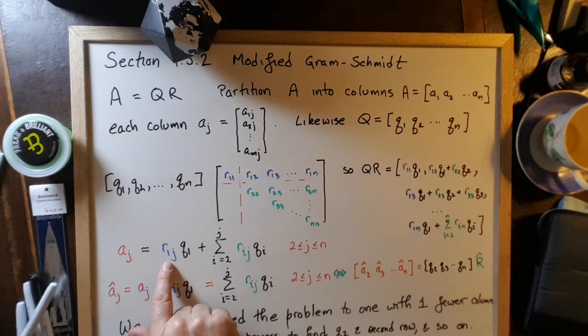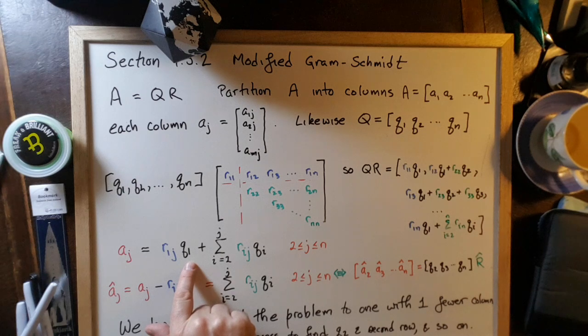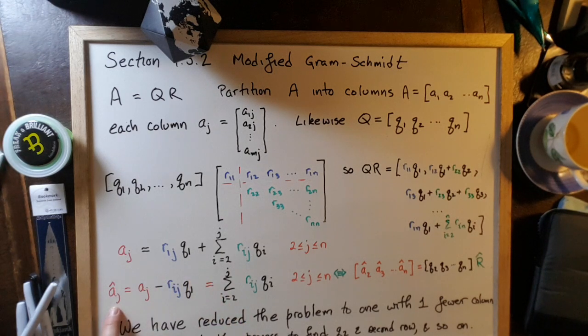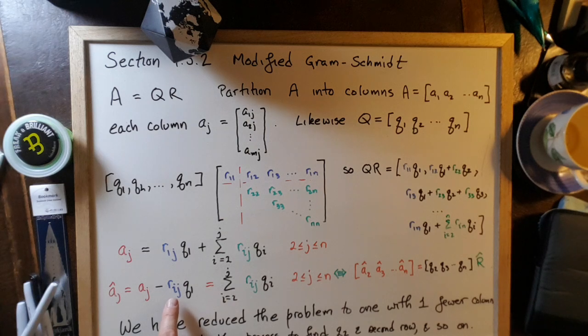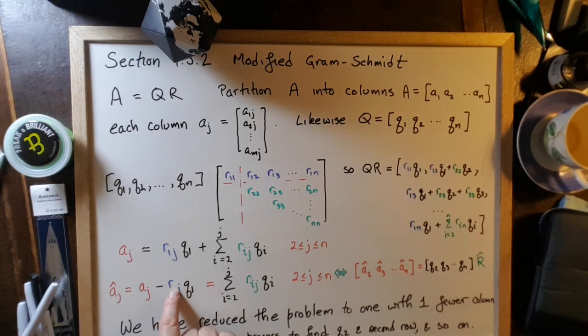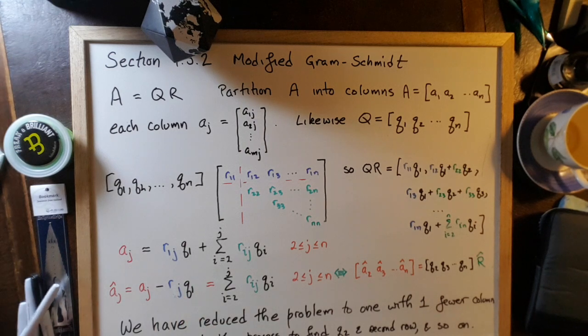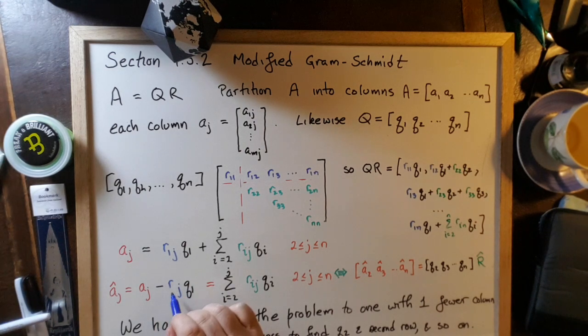The first entry, we actually know what all of these are. We know what this is, so we can subtract this from that and get a new column. So the J hat column is AJ minus R1JQ1.